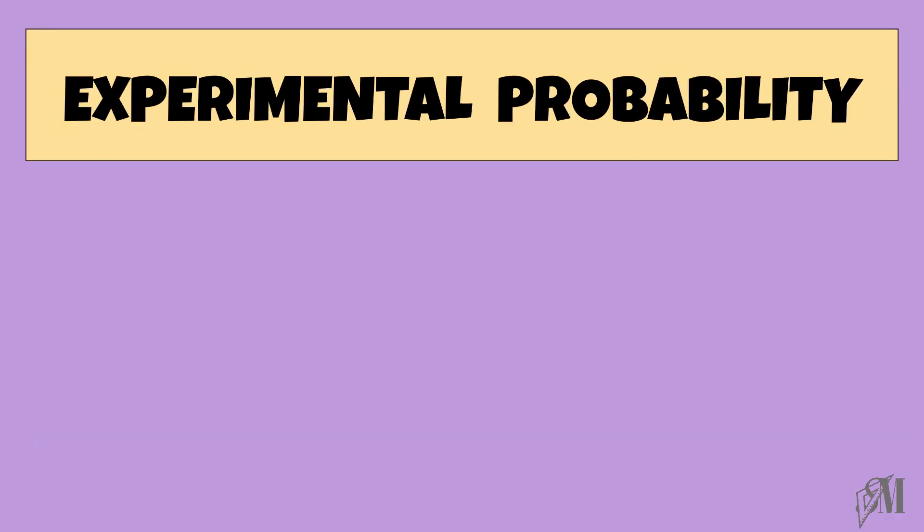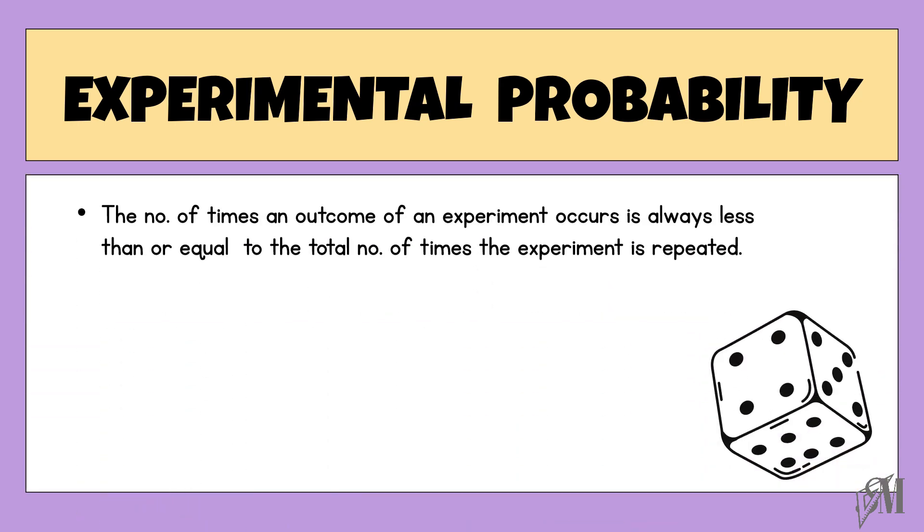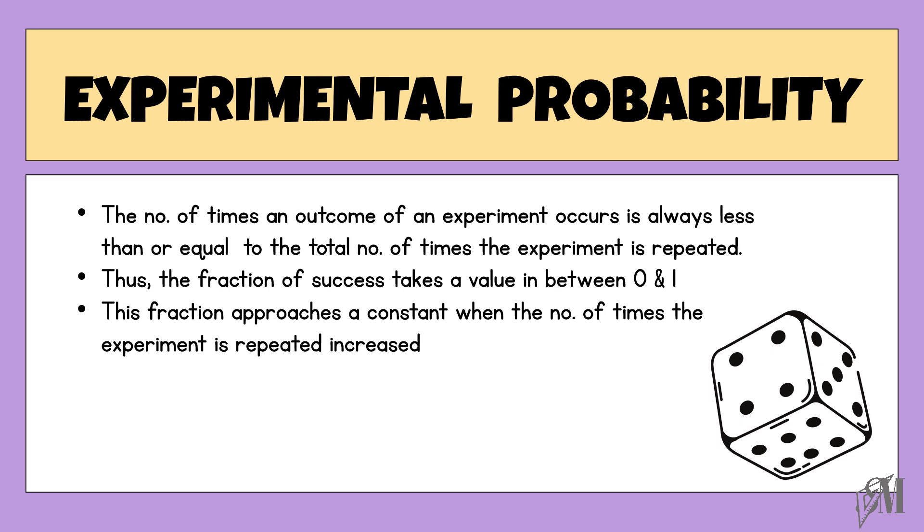Now let us see what is experimental probability. When an experiment is conducted, the total number of times an outcome occurs is always equal or less than the number of times the experiment is repeated. So the fraction of success takes a value between 0 and 1. When you repeat an experiment many times, the fraction approaches a constant value. This constant value is called the experimental probability.